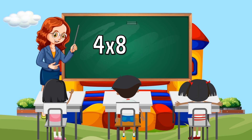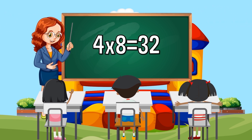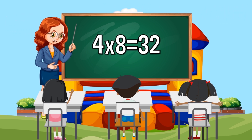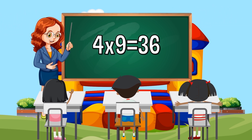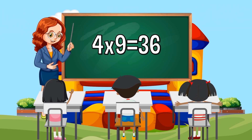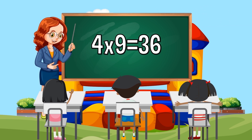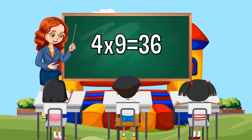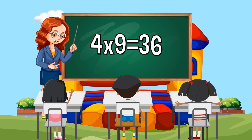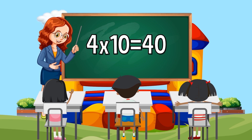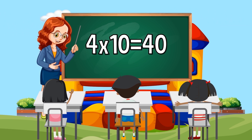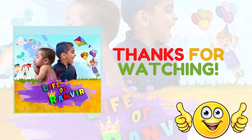Four times eight equals thirty-two. Four times nine equals thirty-six. Four times ten equals forty. Thank you for watching my video.